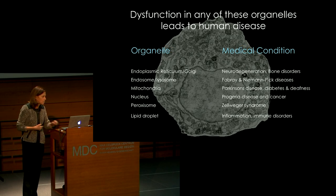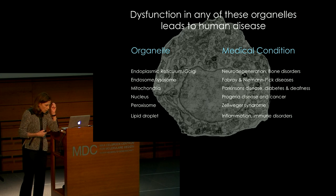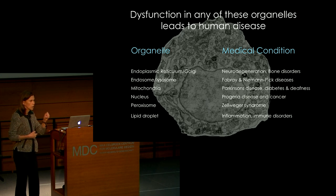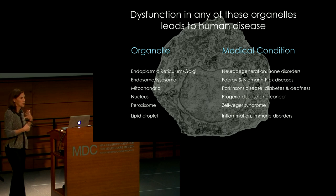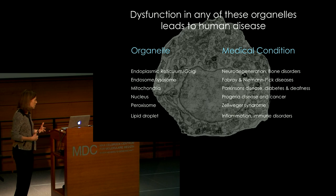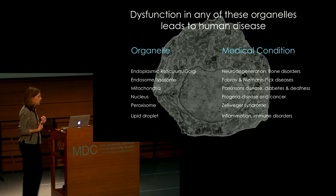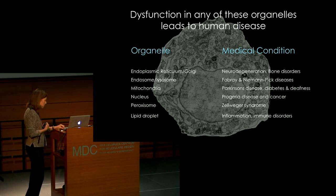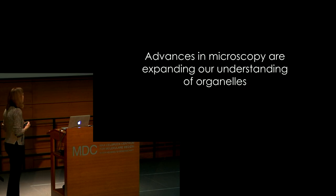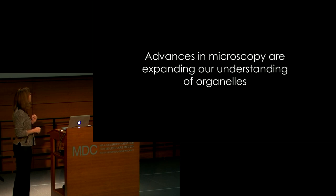These sub-compartments are really the basis of cellular health. When things go wrong in any of these sub-compartments, you get medical conditions, you get diseases. This is just a short list of medical conditions that can be directly linked to particular sub-cellular compartments. So it's really important to understand how these organelles are behaving. What I want to talk about today are advances in microscopy that are expanding our understanding of these organelles.